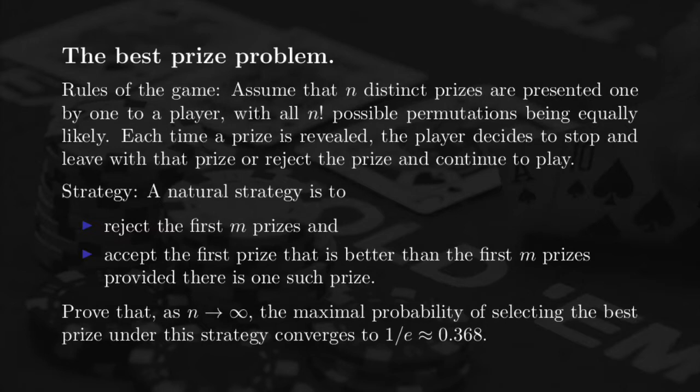So here is the problem. It's kind of a game and the rules are the following. You assume that you have N distinct prices that are presented one by one to a player. Distinct prices here means you can rank them from best to worst, and we assume the player is able to do this ranking assuming she got to see all the prices. However, instead of seeing all the prices at once, she can only see them sequentially and one by one. We assume that all the possible N factorial permutations of those N prices are equally likely.